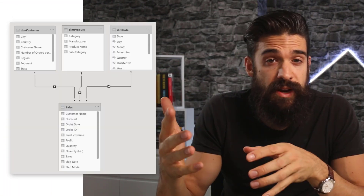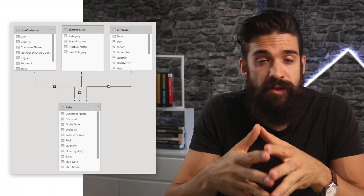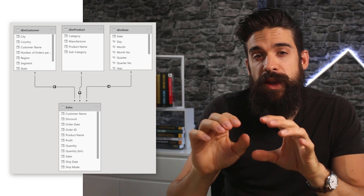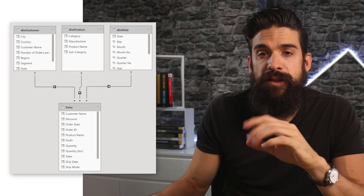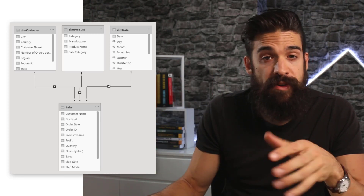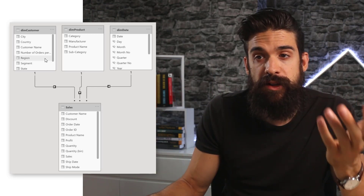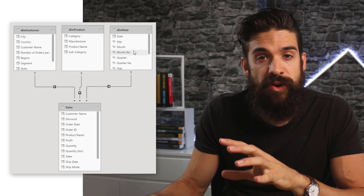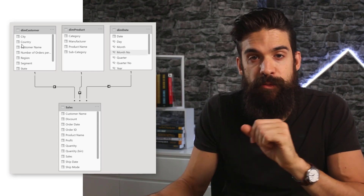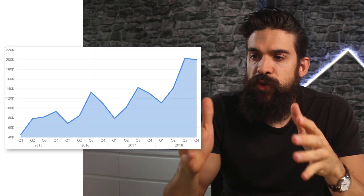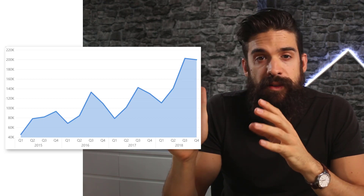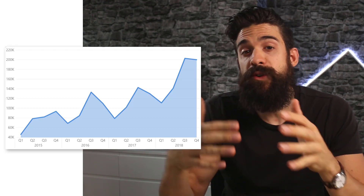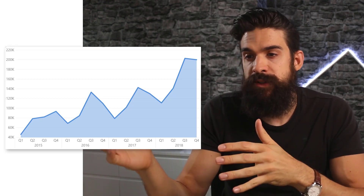You're going to perform core analysis on a fairly standard data set where we have sales and different tables with information on the customers, the different products that we're selling, and of course we have a date table. In the first step, you have to create a line chart — an area chart — that shows the overall sales over time.